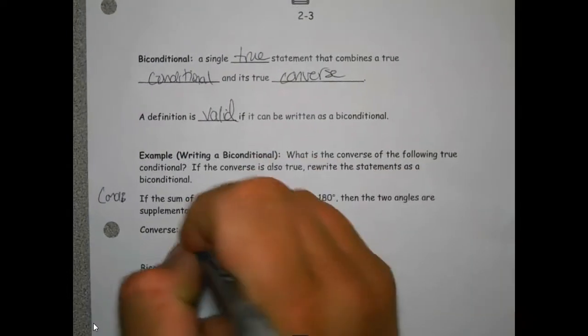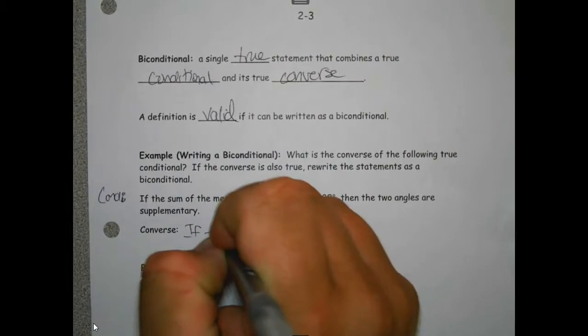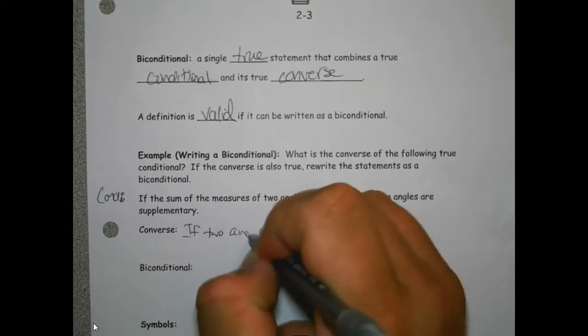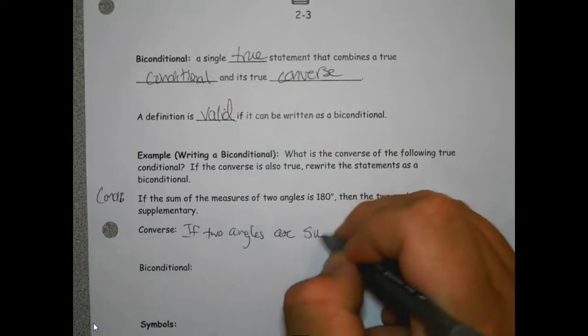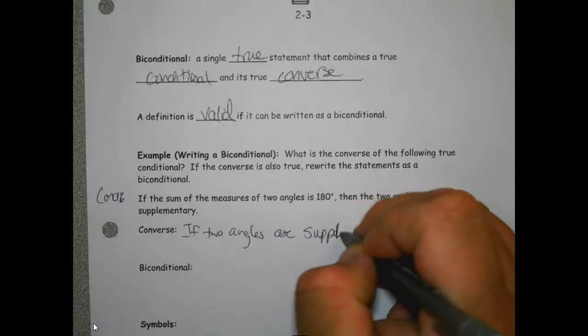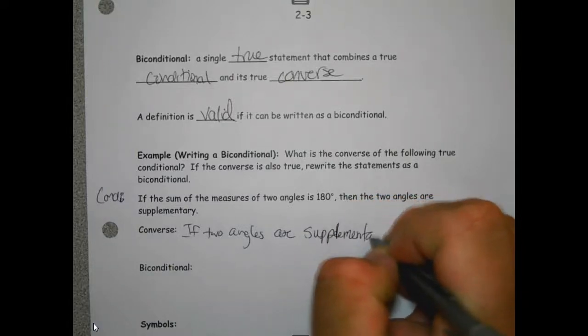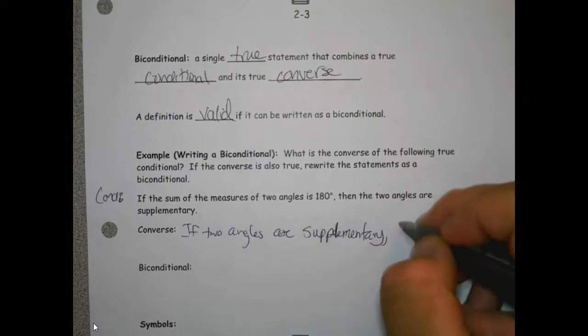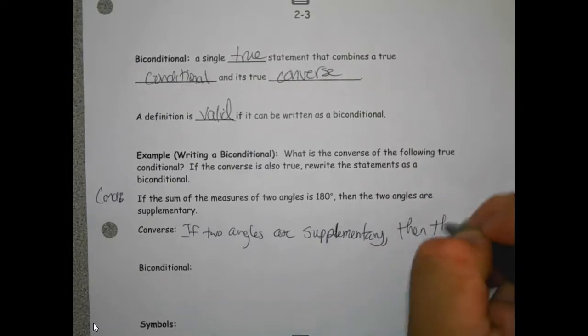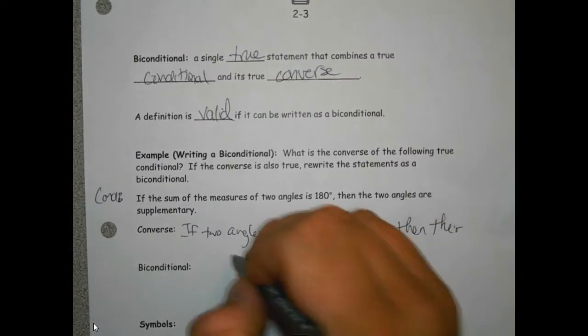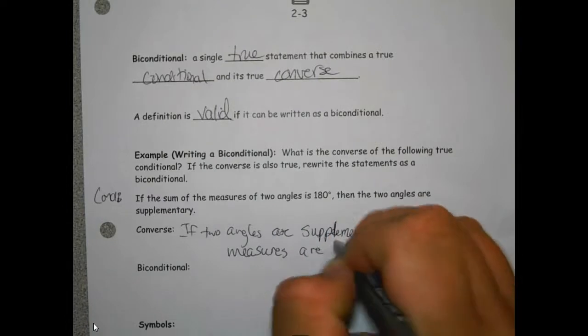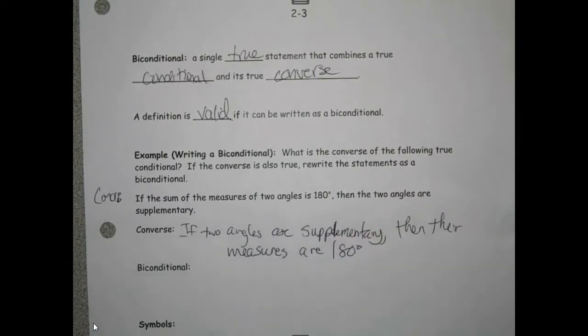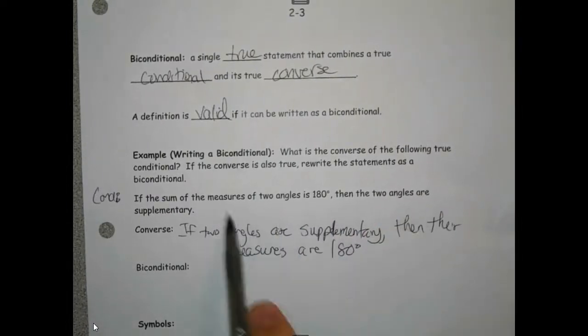If two angles are complementary—sorry, supplementary—then their measures are 180 degrees.